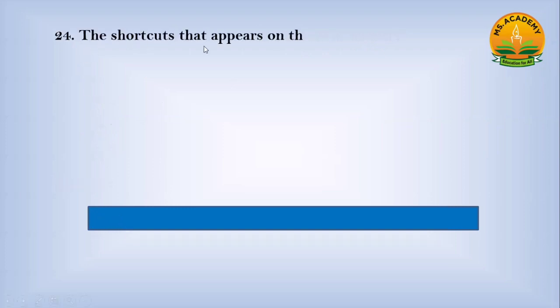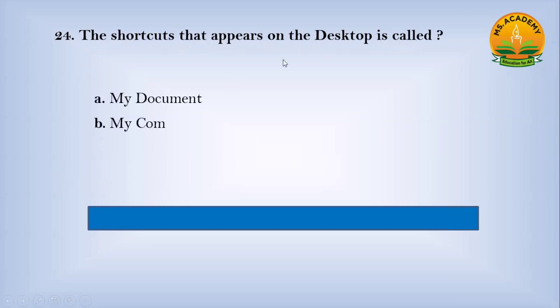The shortcuts that appear on the desktop are called — option A: My Document, option B: My Computer, option C: icon. Answer: C — icon.